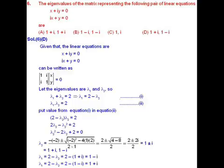Let the eigenvalues be lambda 1 and lambda 2. We know that the summation of the eigenvalues equals the summation of the diagonal elements of the matrix, and the multiplication of the eigenvalues equals the determinant of the matrix. So lambda 1 plus lambda 2 equals 2 and lambda 1 times lambda 2 equals 2. Option D is correct.